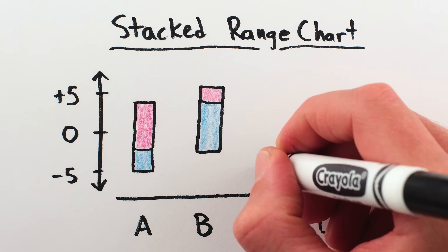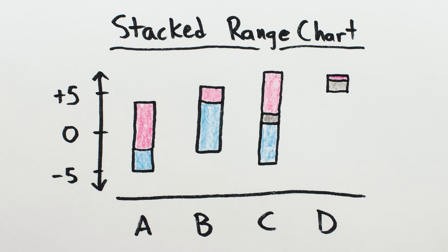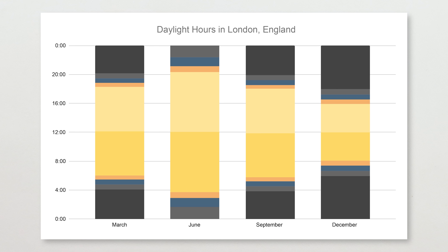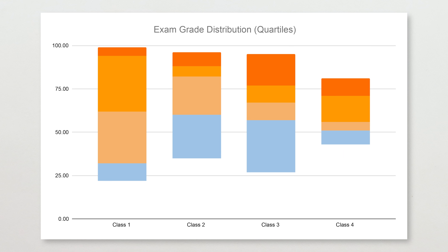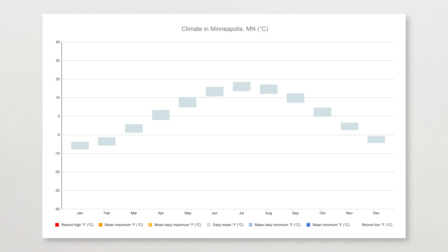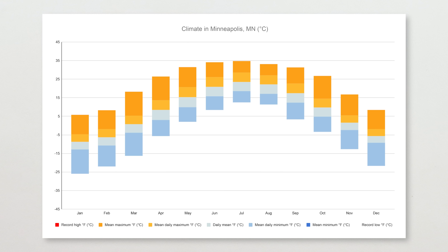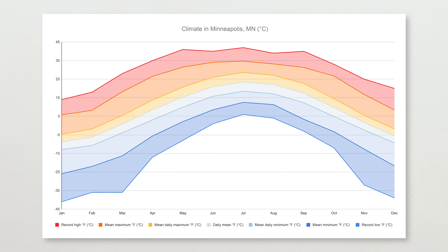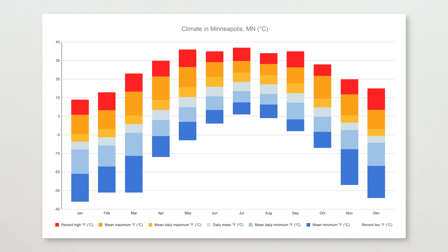Really, any chart where the x-axis is a discrete set of things and the y-axis is a range that could go below and above zero is a candidate for this type of chart. Like if you wanted to plot the range of latitudes of each of the continents, or show when twilight, dusk, and daytime are at a given location, or compare percentiles for student grades in different classes, or the local climate — plotting the average daily low and high temperatures for each month, along with the average monthly low and high and the record monthly low and high temperatures across a year — gives you a picture of the seasonal variation in temperature for a particular location. You can do this with the stacked area chart, but that makes less sense than stacked columns, because area implies some sort of continuity when, to create the data, you are literally binning or averaging by month.